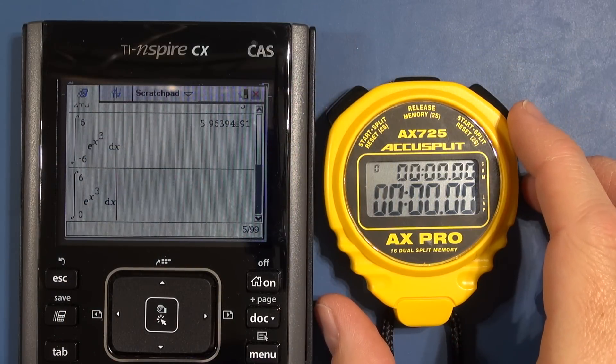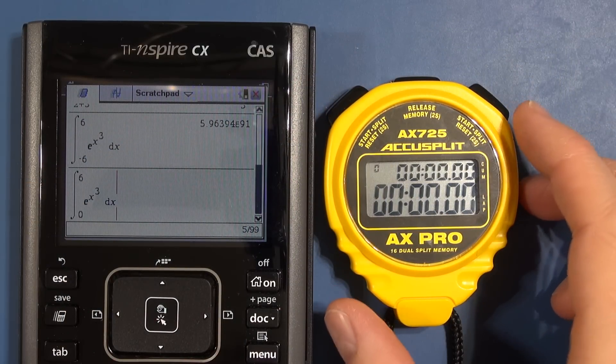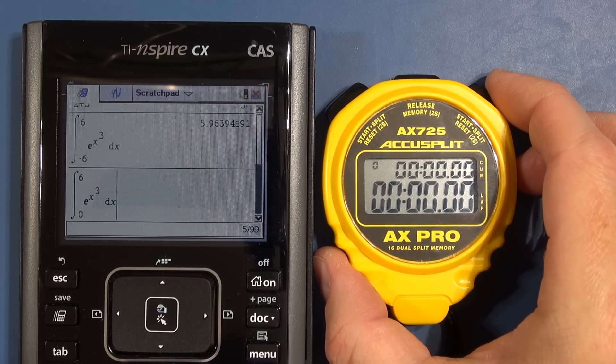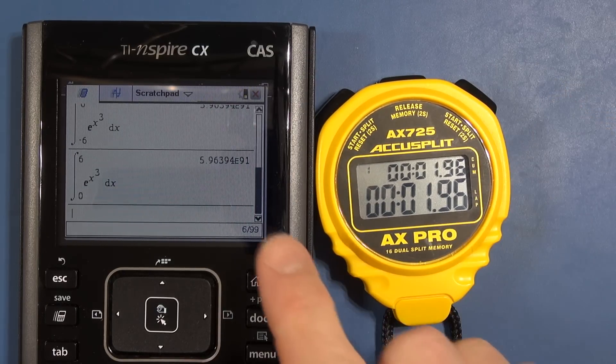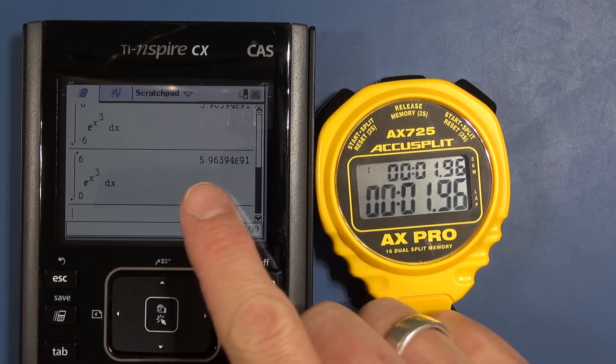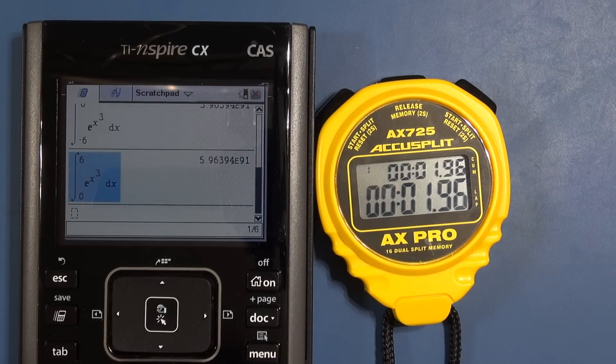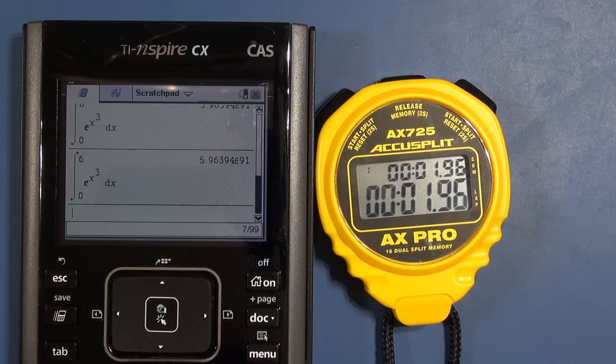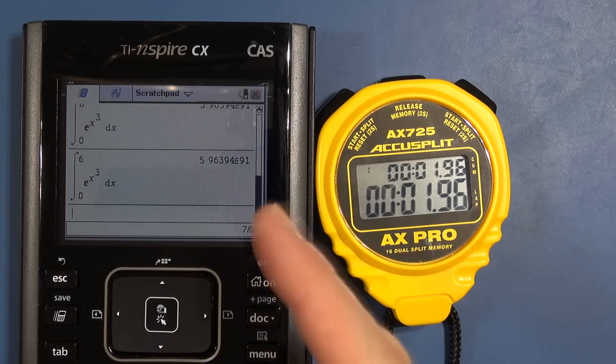Right next we have the Texas Instruments Inspire CX CAS. Again same function. I'm going to push enter and start one, two, three. And basically it's almost not worth starting the stopwatch because it comes up with the answer immediately. I'll just do that again. So if I enter on that. Bang. The answer appears straight away. It's less than a second. So I'll note that as such.